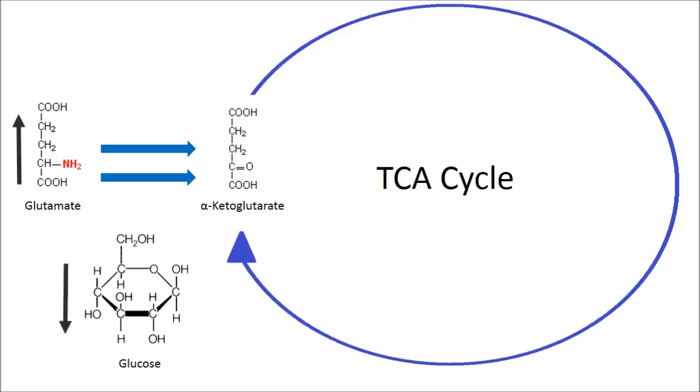Increasing glutamate levels or decreasing glucose levels will increase the oxidation of glutamate into TCA cycle intermediates. Conversely, reversing these effects decreases glutamate oxidation.